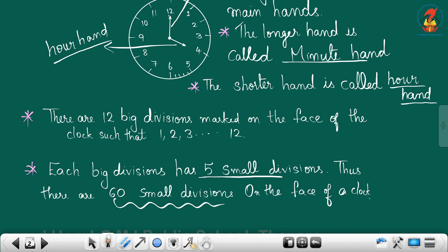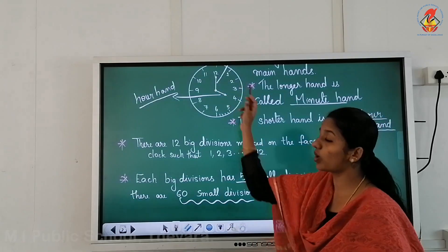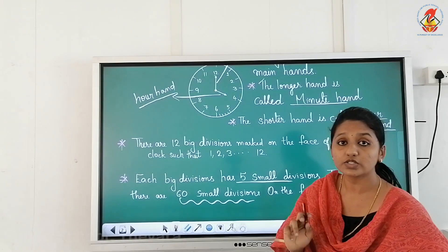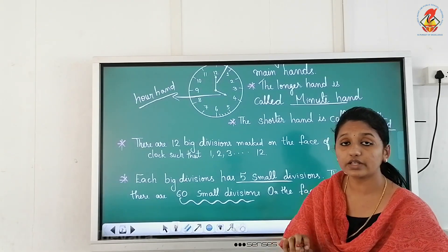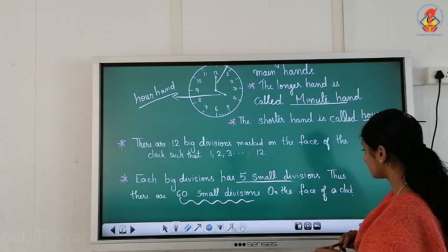Each big division has five small divisions. So from twelve to one, how many small divisions are there? Five small divisions.